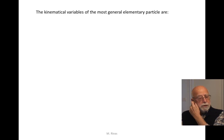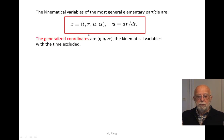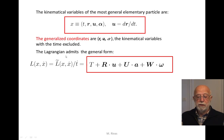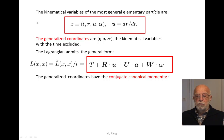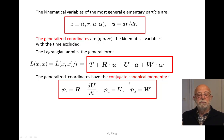For our most general elementary particle, the kinematical variables are time, position, velocity of the point, and orientation of a Cartesian frame linked to that point. The generalized coordinates are the kinematical variables with time excluded: R, U, and alpha. The Lagrangian has a general form once we divide L-tilde by T-dot, and the generalized coordinates have corresponding conjugate canonical momenta: PR for variable R, PU for variable U, and P-alpha — three functions W — for the three variables alpha.